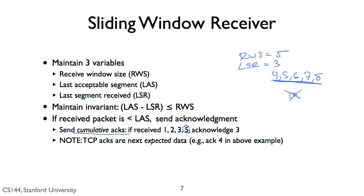One detail: TCP doesn't acknowledge the data it's received, but rather N plus 1. TCP acknowledgements are in terms of bytes, so if TCP has received up to byte N, its acknowledgement packets will say N plus 1 — the first byte of data expected. If you're looking at a TCP trace, keep in mind the acknowledgement value in the TCP header isn't the last byte received, but rather the first missing byte.